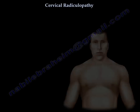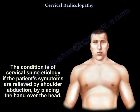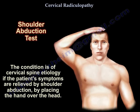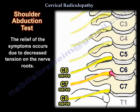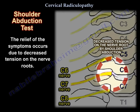We know that the cervical spine and shoulder problems overlap. The condition is of cervical etiology if relief of the pain occurs with shoulder abduction by placing the hand over the head. The relief of symptoms occurs due to decreased tension on the nerve roots.